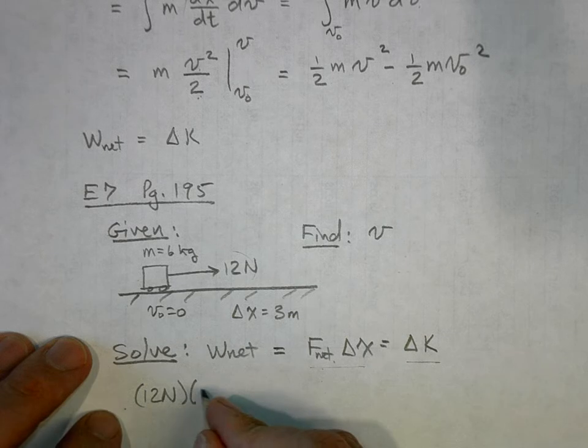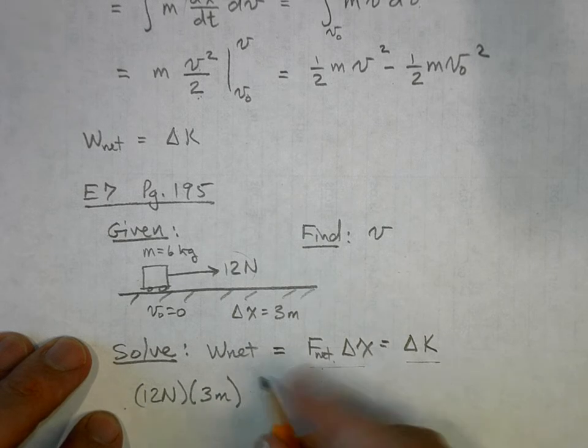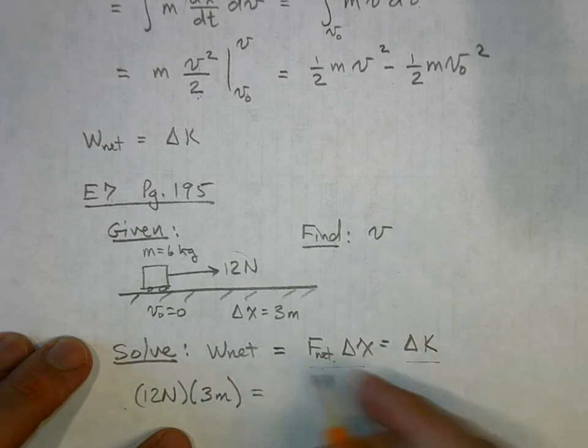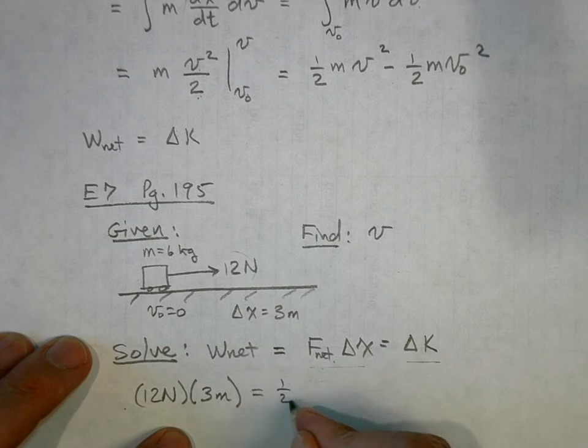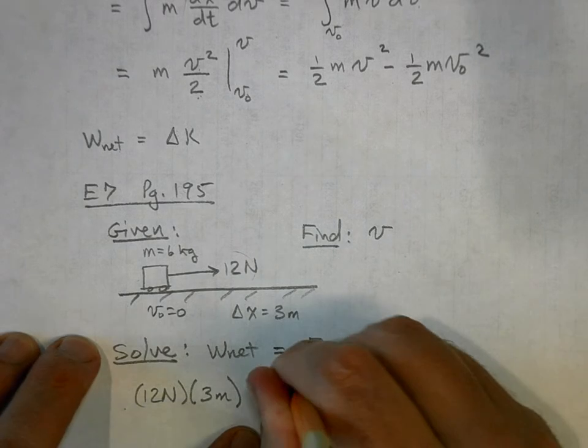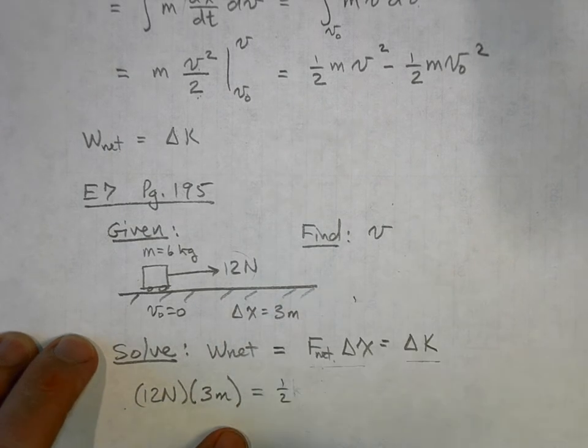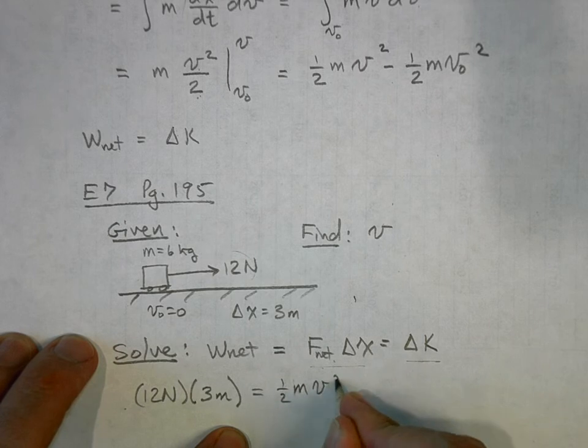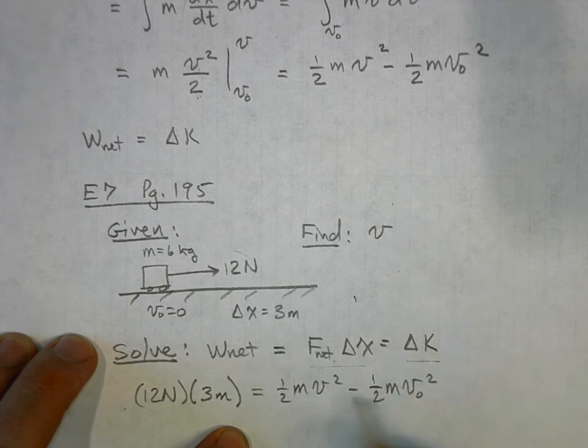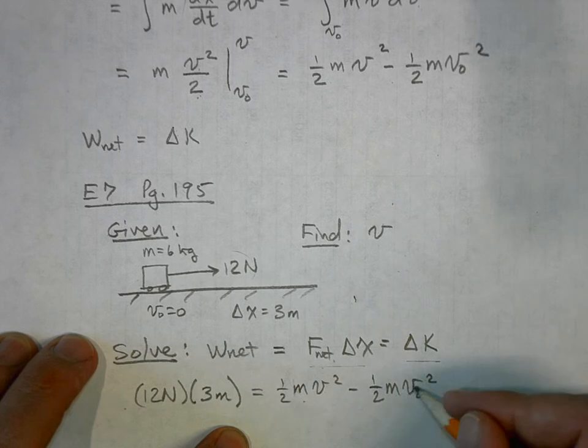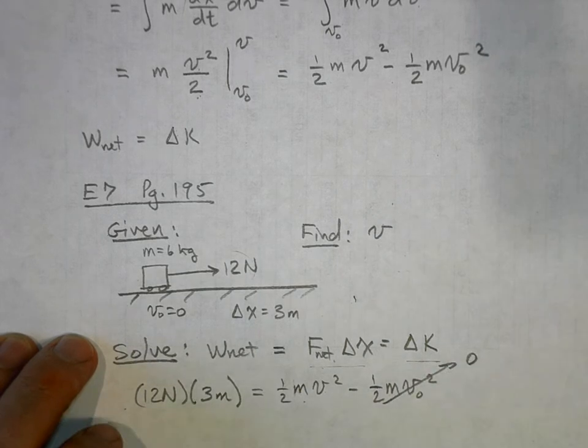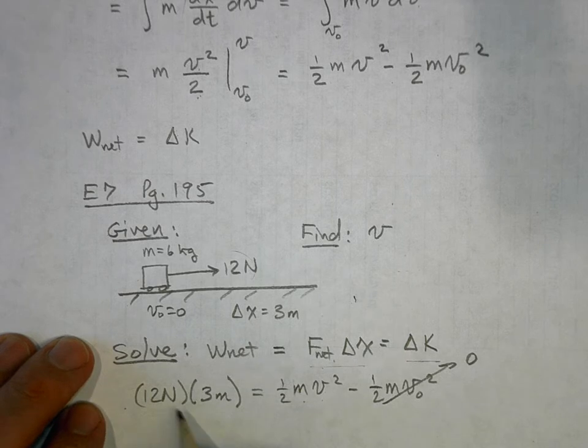And that's going to be equal to one half—I'm sorry—one half mv squared minus one half mv not squared. This is the change in kinetic energy. This is of course a zero. And now I can solve for v directly here. This is 3 times 12 is 36, 36 joules.